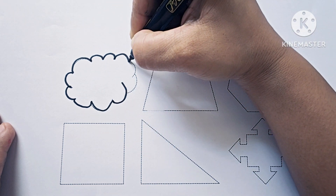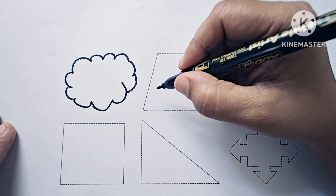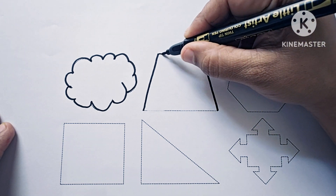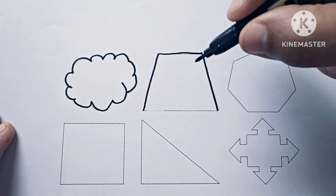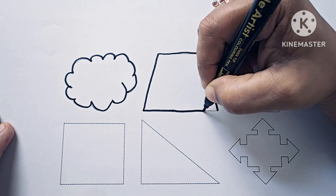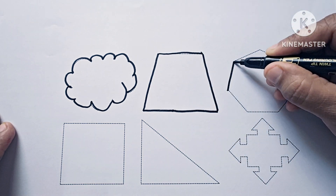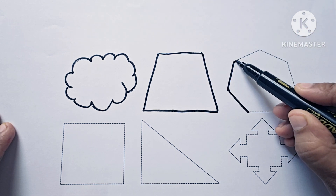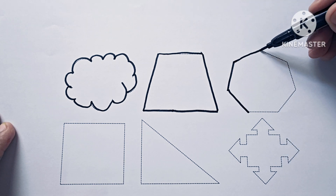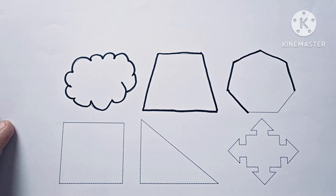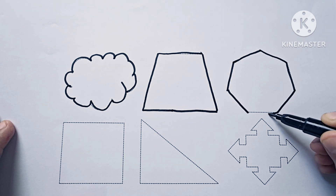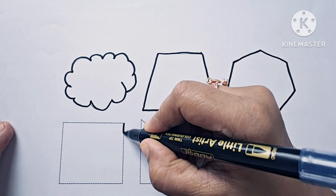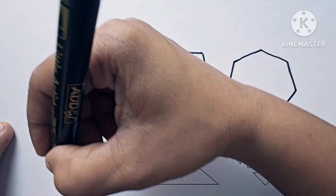This is a trapezoid. It has four sides. This shape has seven sides — seven sides.